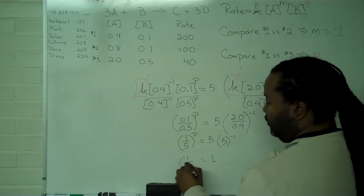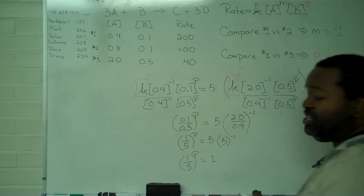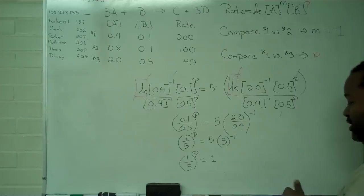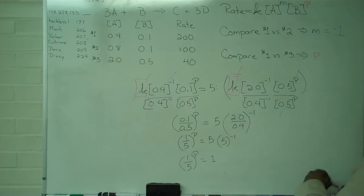So, 1 over 5 raised to the P power equals 1. This means that P has to equal 0, because anything raised to the 0 power will give me 1.